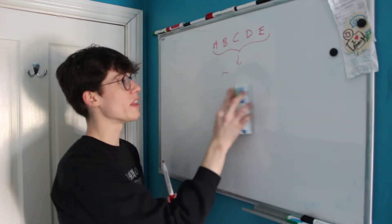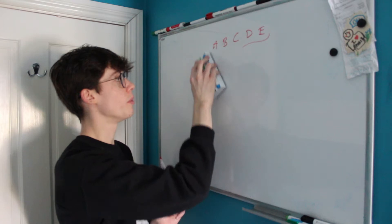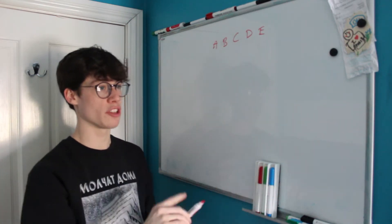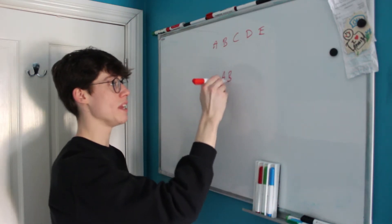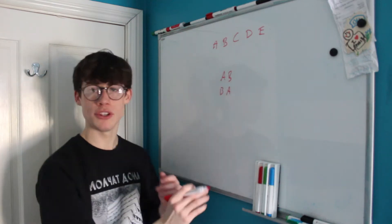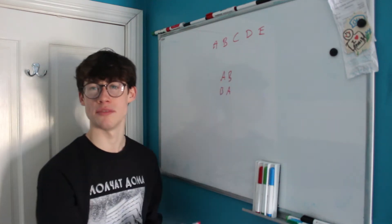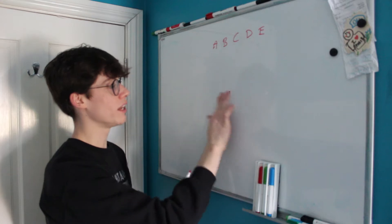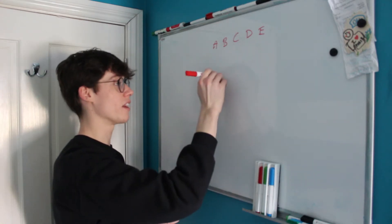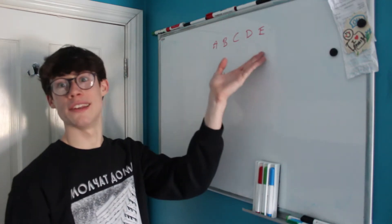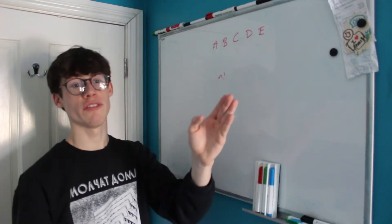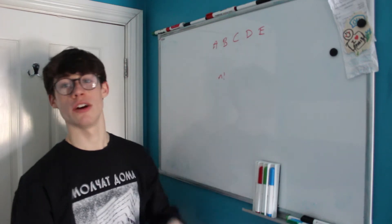So remembering that we can calculate the total number of permutations, the way to calculate this is just by doing n factorial of all of the letters that we've got. So in our case it would be 5 factorial which I believe is 120.